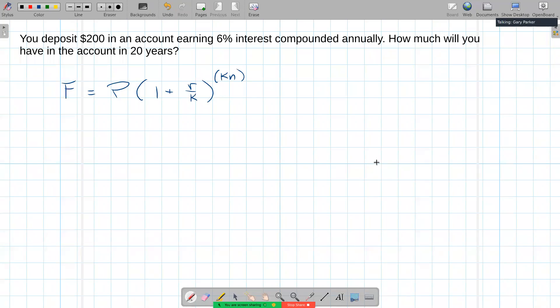Let's consider this finance problem. We want to deposit $200 in an account, and that account earns 6% interest compounded annually. How much will you have in the account in 20 years?